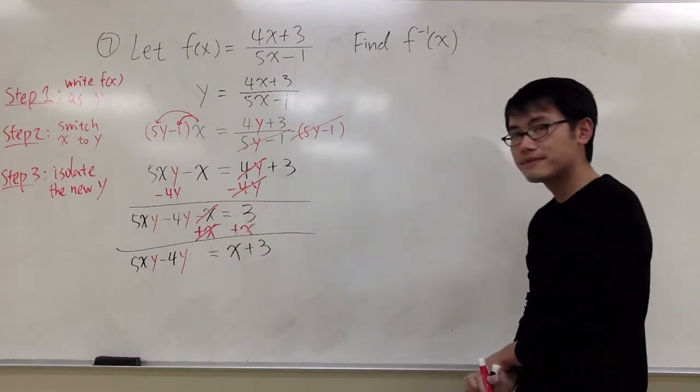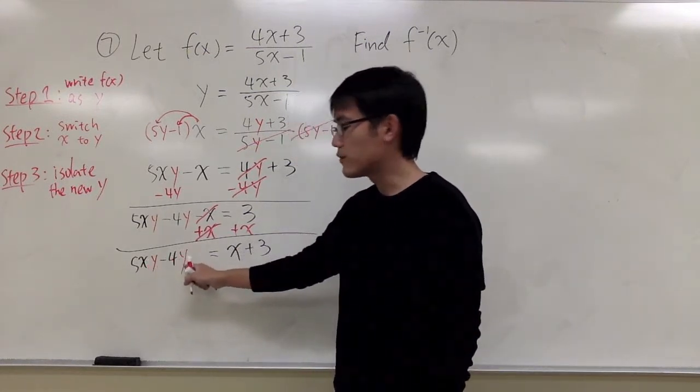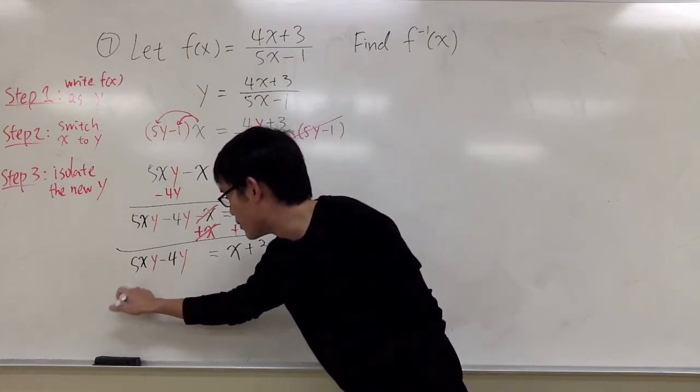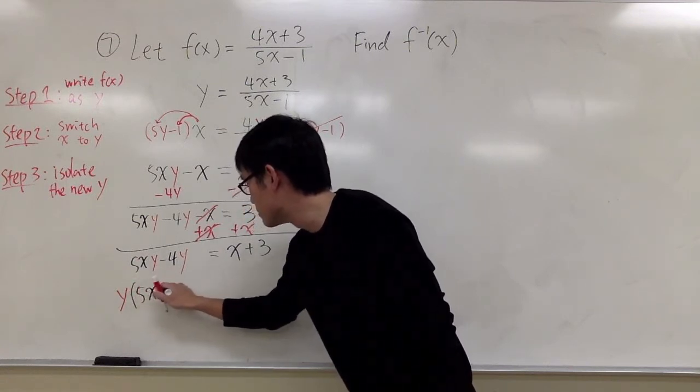Just like that. And now, I have 5xy minus 4y. You see both of them have the y, right? And the trick is, I'm going to factor out the y, and I'll leave with 5x minus 4.